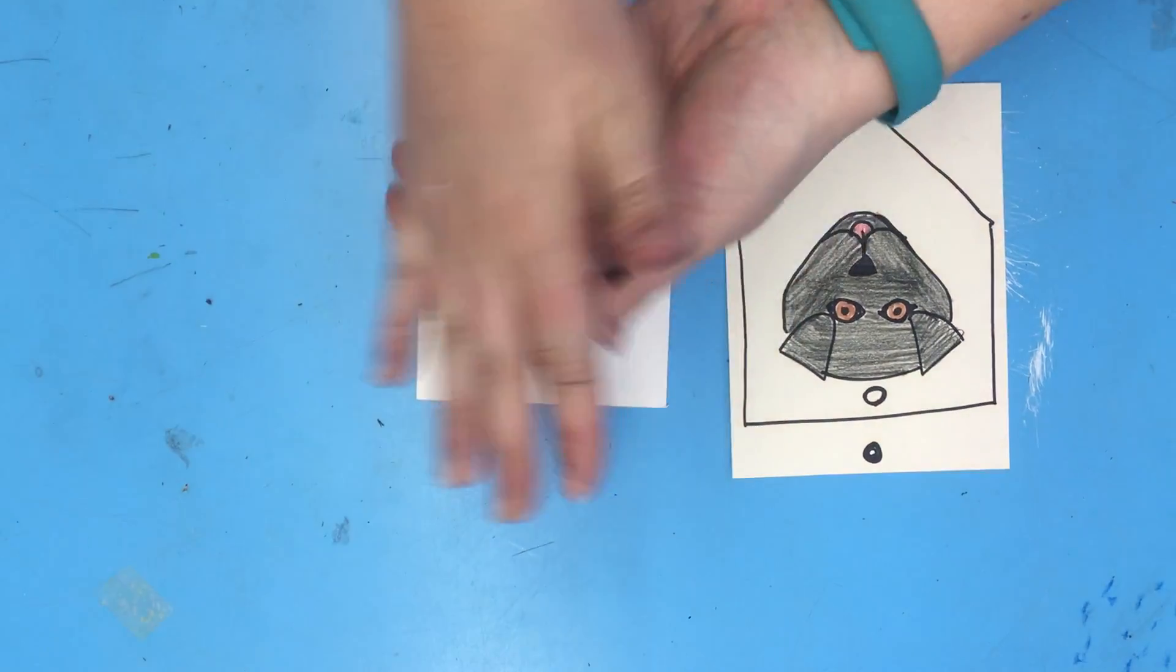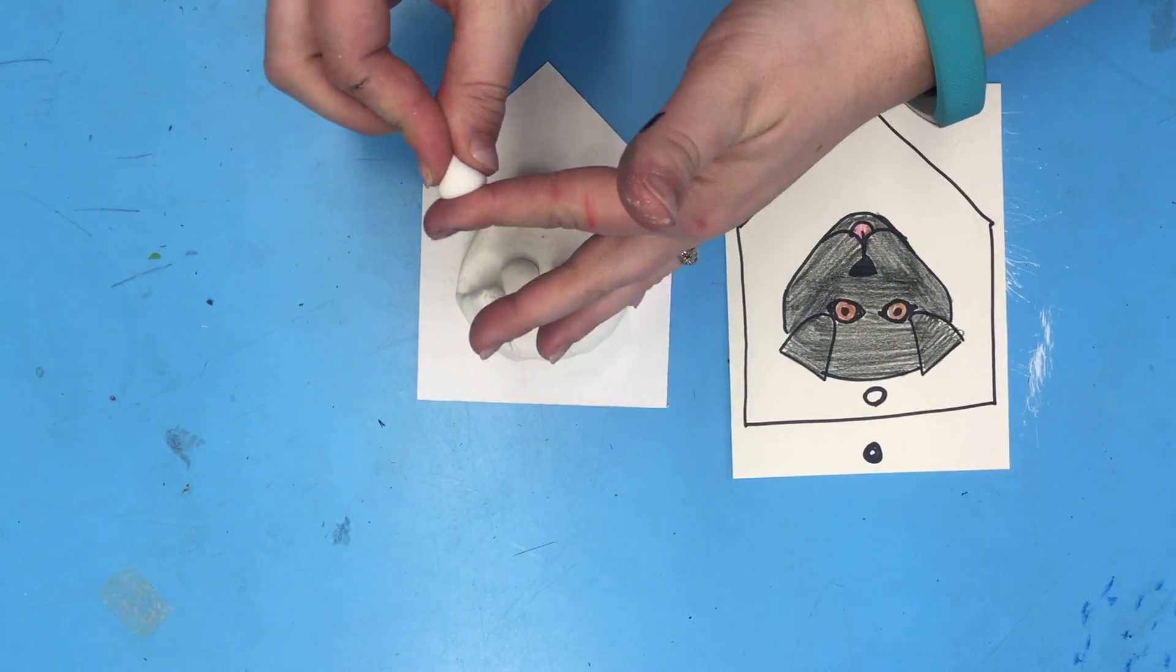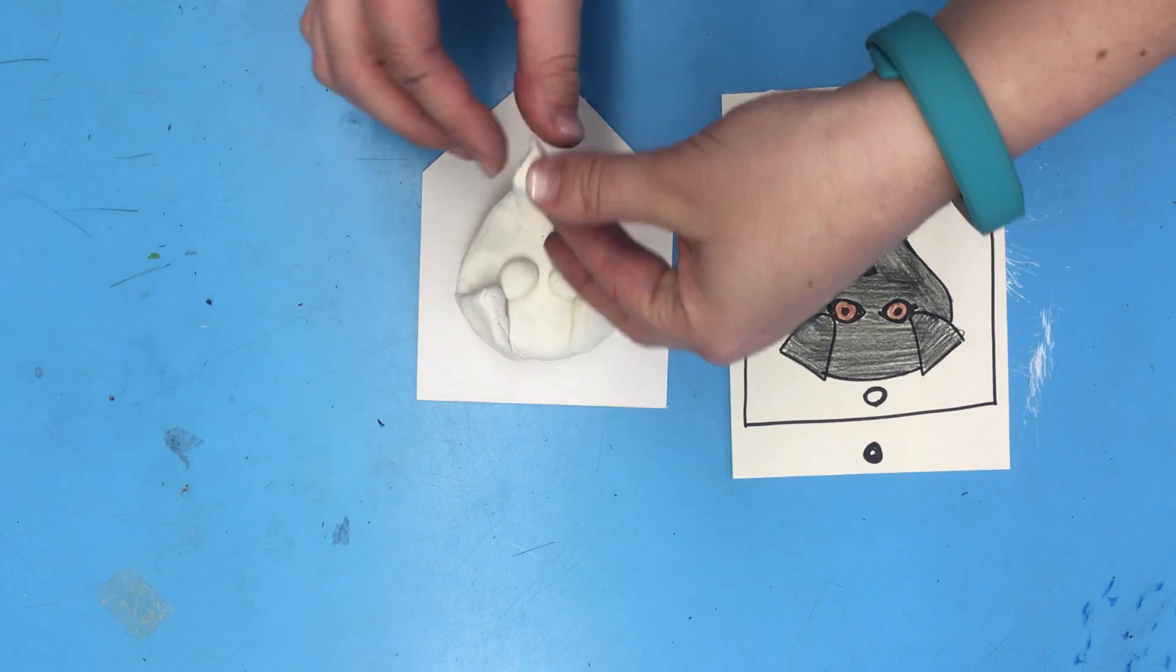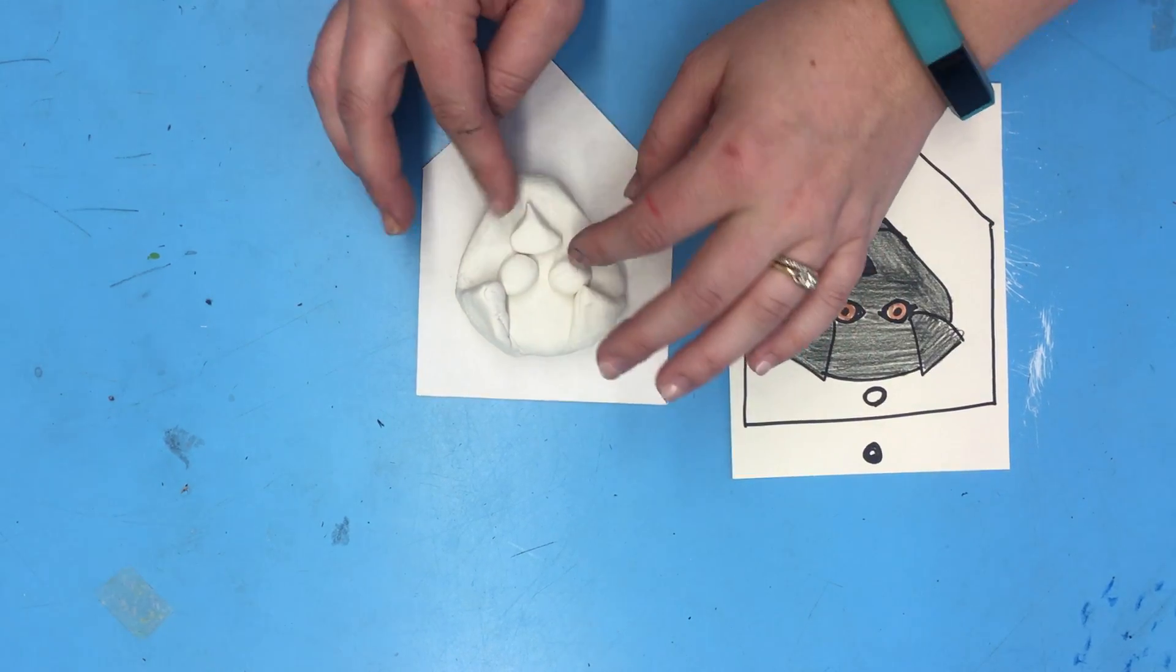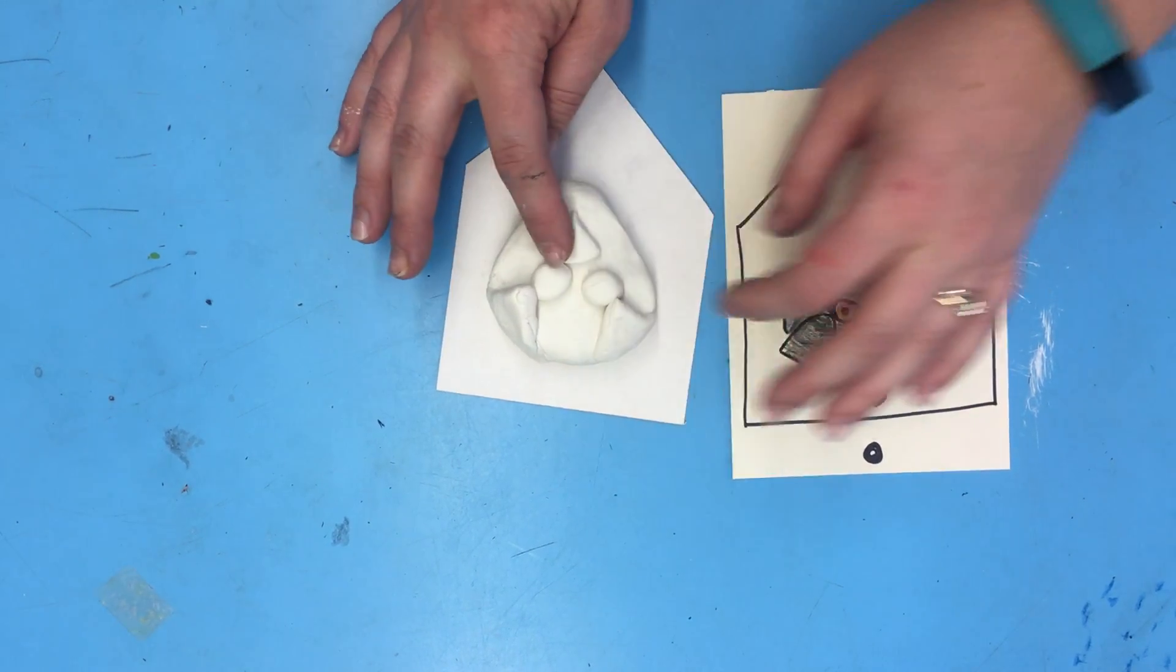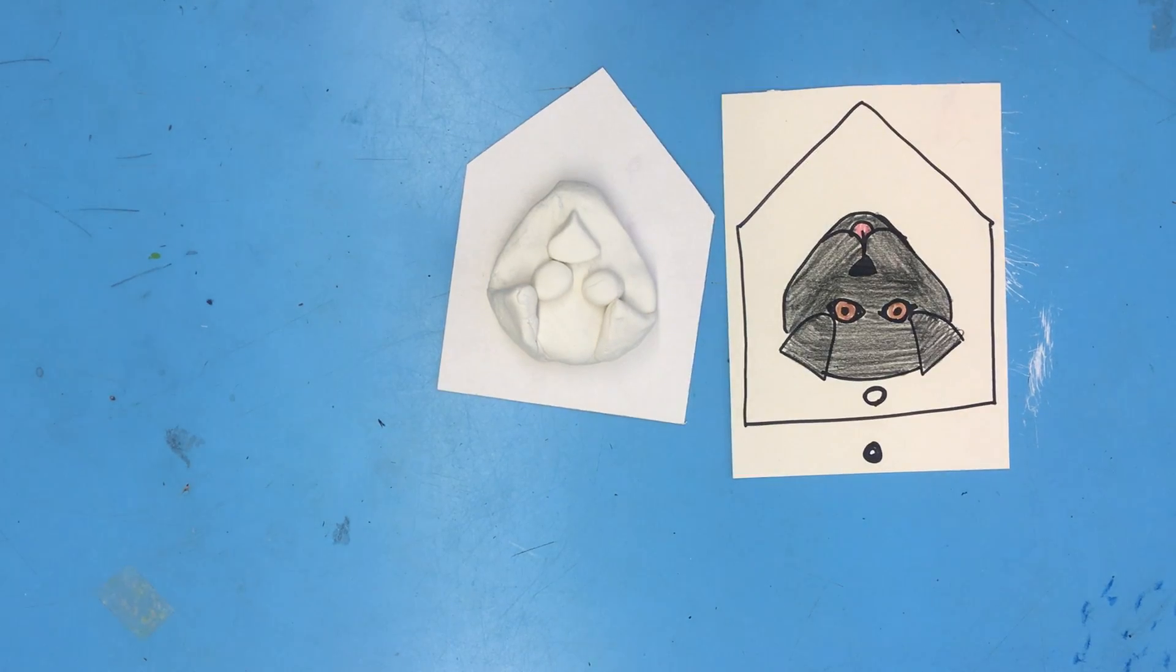I'm going to make the nose. It's a little triangle. And I'm going to make the little tongue.